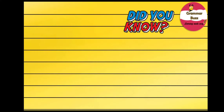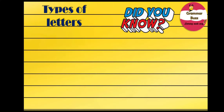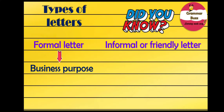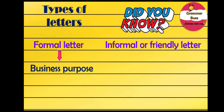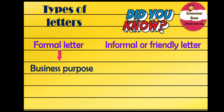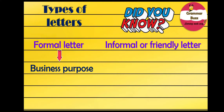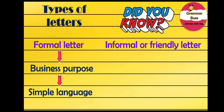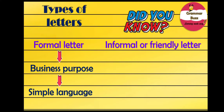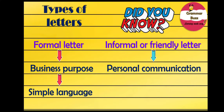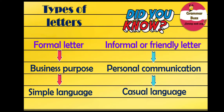Did you know that letters can be divided into two types? Formal letter is written for official purposes to authorities, dignitaries, colleagues, seniors, etc., and not to personal contacts like friends or family members. Remember, formal letter is written for business purposes. It is written in simple language that is easy to read and understand.